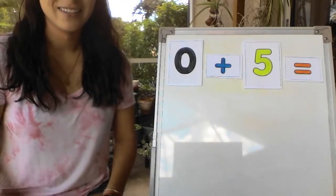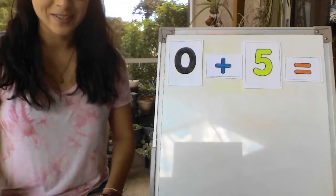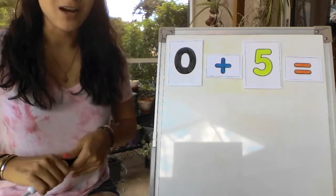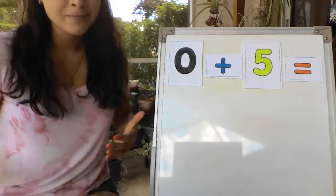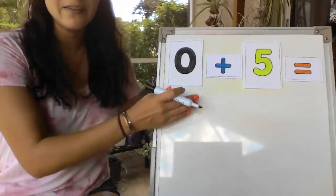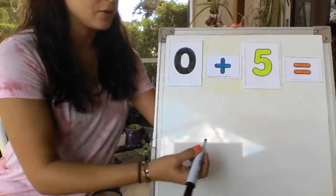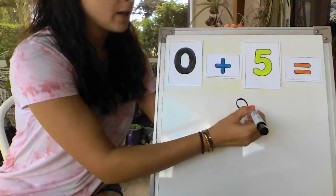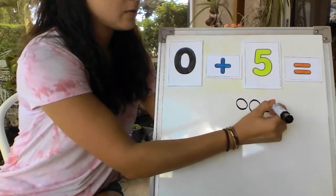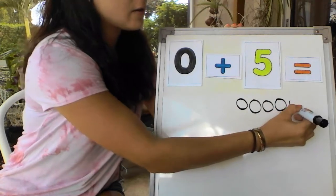Alright. Let's do it with the marker. Again, how do we draw 0 circles? We just don't draw any. We leave this blank. Now let's draw five circles over here. 1, 2, 3, 4, 5.